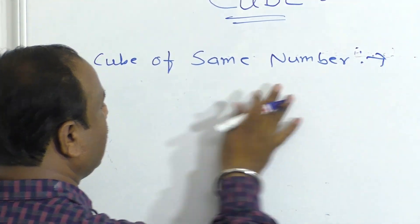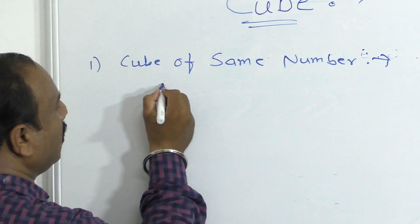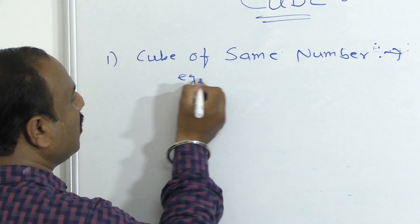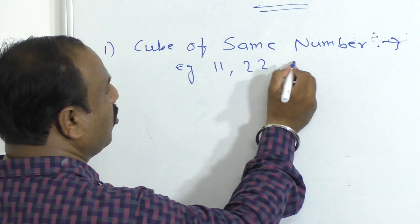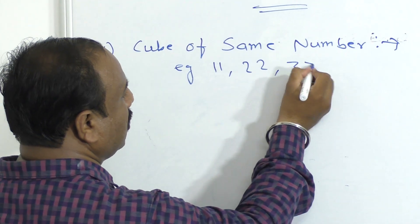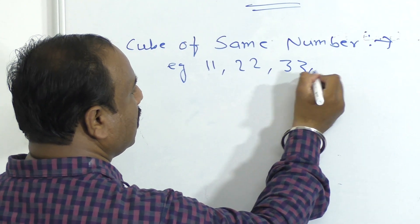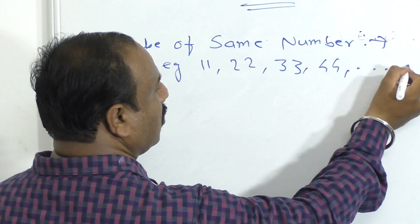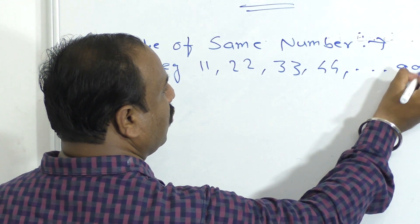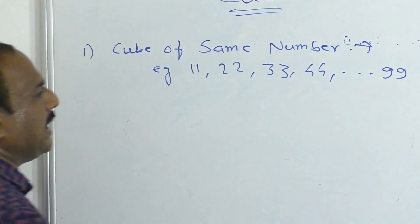So we have 11 here: 22, 33, 44, 99 — the same digit repeated numbers.